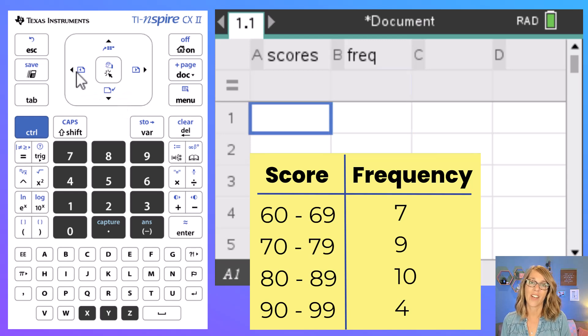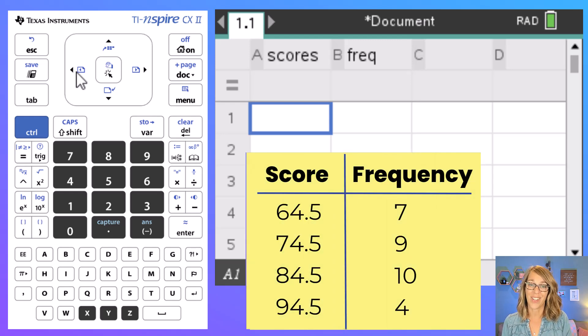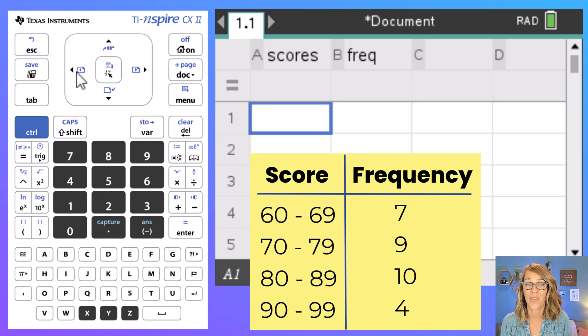Now the data that I'm using is actually a grouped frequency distribution. You might just have numbers in your data column. You can enter your numbers here but I need to find midpoints first. That first group is 60 to 69. I cannot type that into my cell here but I can type in the midpoint.